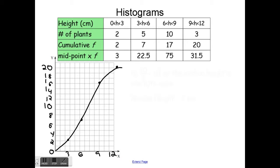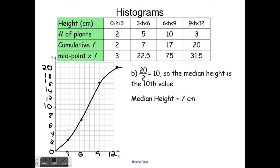Once you have the curve, you can find an estimate for the median. The median is the value in the middle. We don't know the individual heights, so we make our best guess. There are 20 plants total, so I divide by 2 to get 10 — meaning the 10th value is the median. I go to 10 on the y-axis, draw a line across to the curve, then down to the x-axis. The median height is about 7 centimeters.